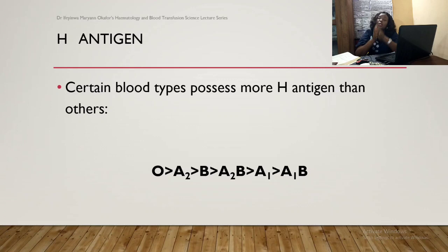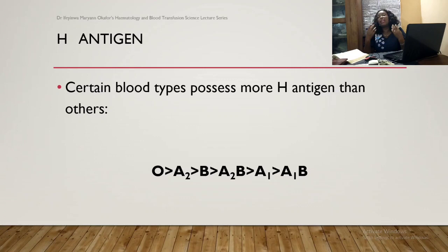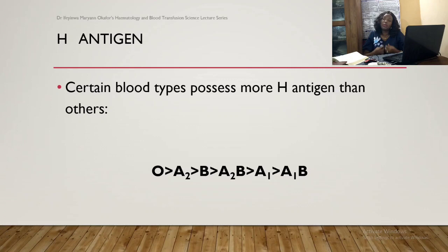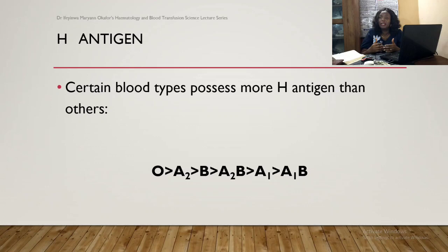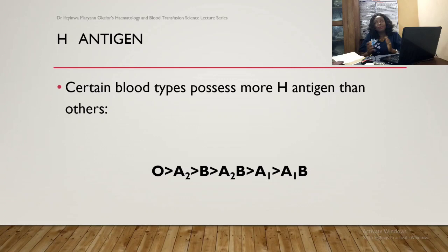H antigen is predominantly found in group O individuals because group O individuals can produce fucosyl transferase — which adds fucose to the precursor substance forming H antigen — but they cannot produce the other two enzymes, galactosyl transferase or N-acetylgalactosaminyltransferase. So they form H antigen but cannot form A or B antigen. The surface of their red cells contains H antigen, while their plasma contains anti-A and anti-B.